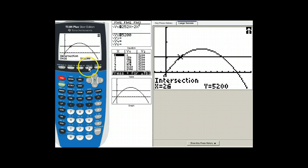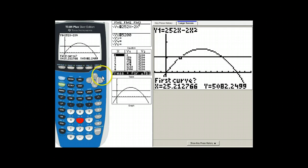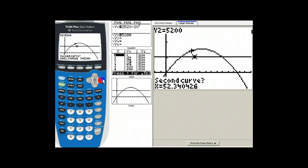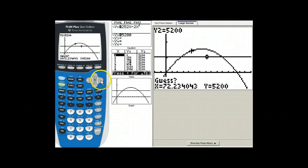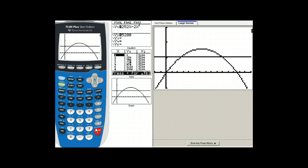The other answer to part B will be the other point of intersection. Second, calc five. Is that a good first curve? Yes, it is. Enter. Is that a good second curve? Yes, it is. Enter. And again, it is important that I put the cursor on the point of intersection for the guess. And we get a second answer.